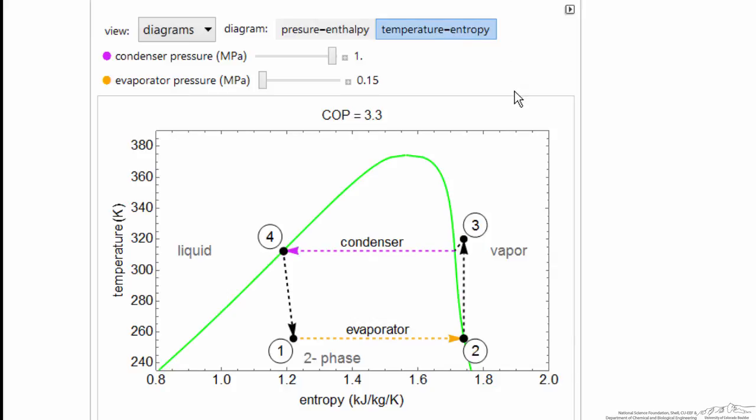The corresponding temperature-entropy diagram shows that for this calculation we are assuming an ideal compressor, so the entropy is constant.